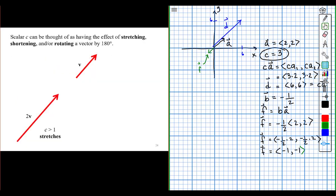So this is what you see here. Scalar c can be thought of as having the effect of stretching, shortening, or rotating a vector by 180 degrees. Here, 2v, since our scalar is greater than 1, it doubles the length of the vector.